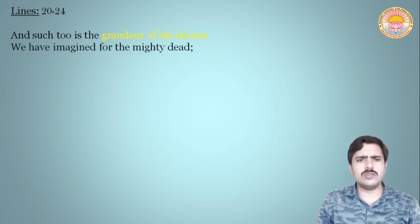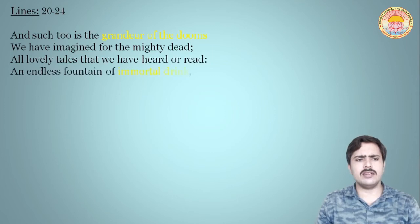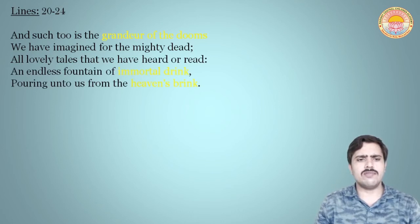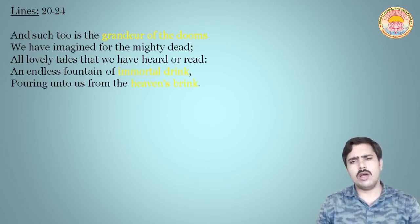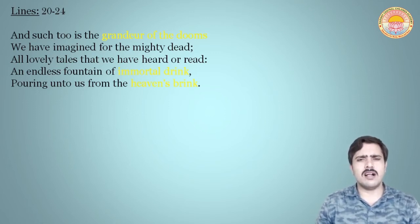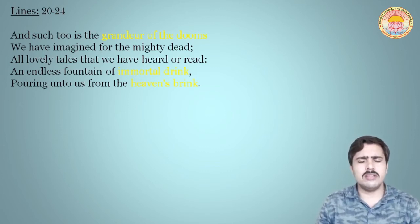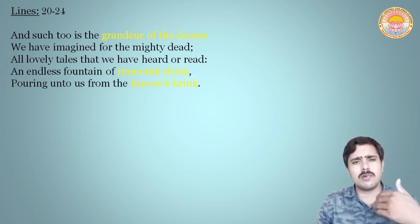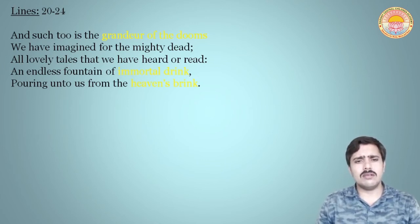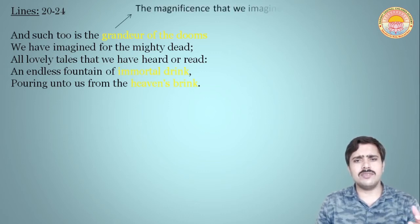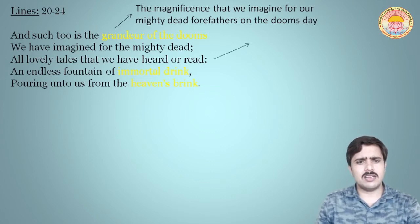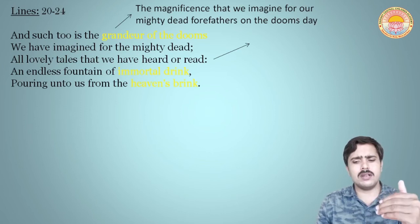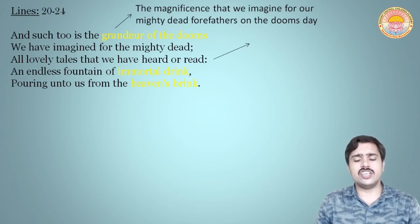Let's see the next lines: 'And such too is the grandeur of the dooms we have imagined for the mighty dead. All lovely tales that we have heard or read. An endless fountain of immortal drink pouring unto us from the heaven's brink.' The dooms refers to the last day of judgment, and here it is also a symbol of death. But the poet tells us that death would also be grand — it would be splendid. The grandeur of the dooms refers to the magnificence that we imagine for our mighty dead forefathers on the Day of Judgment. The 'mighty dead' means those who made great achievements in their lives.